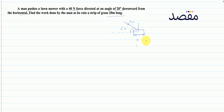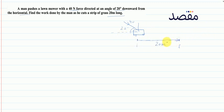इसने एक starting point से end point तक travel किया है — यही final point है। Distance covered by the force is 20 meters। Displacement की direction basically horizontal यानि initial से final point तक है।